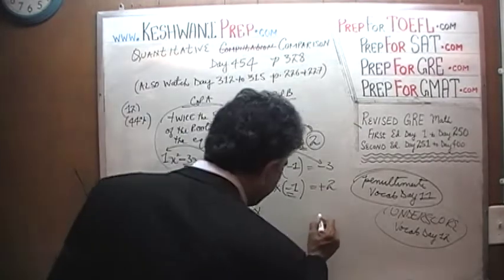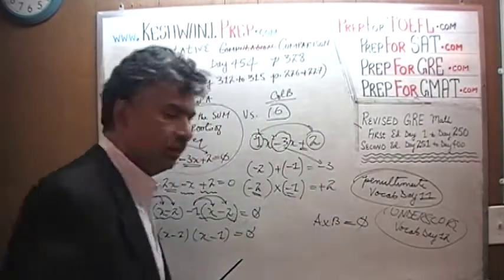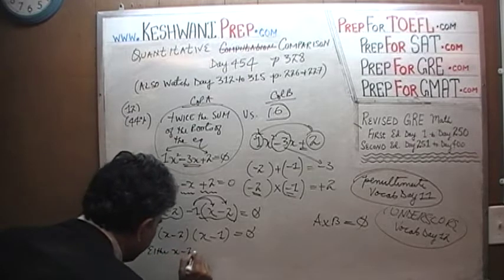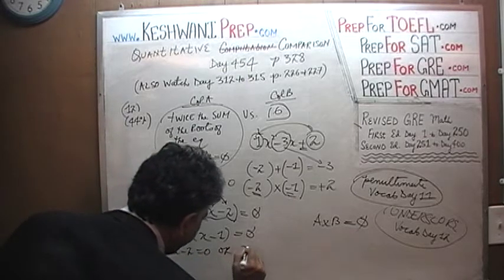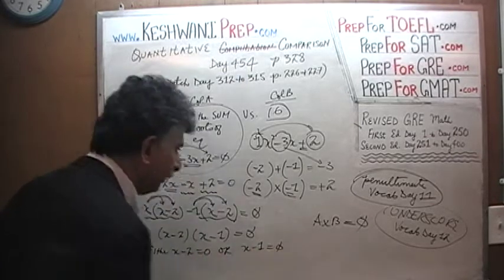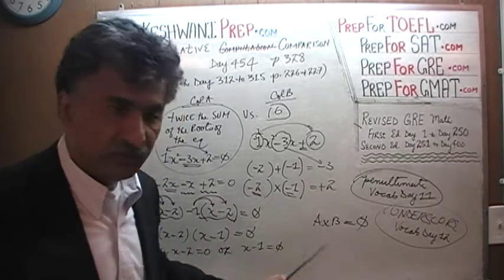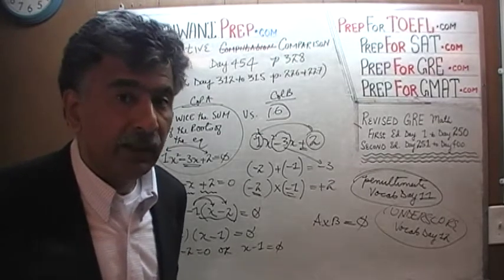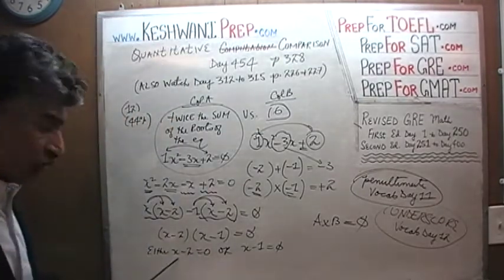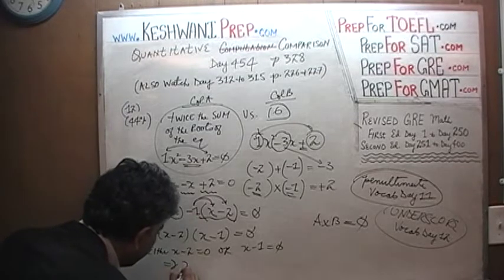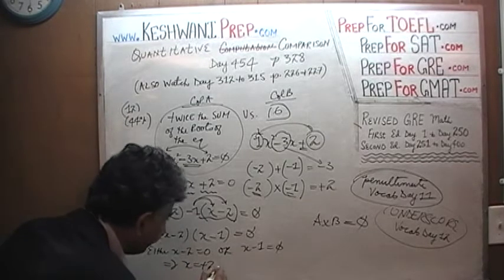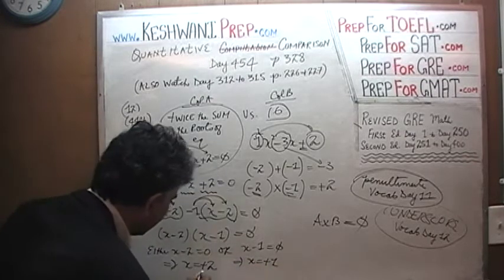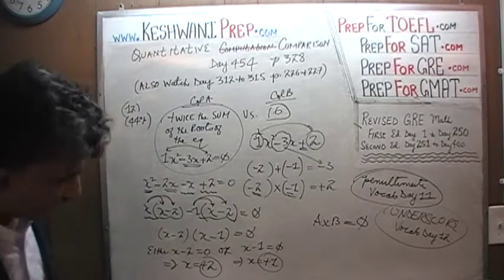When we have a product of two quantities equal to zero, either x minus 2 equals zero, which implies x equals 2, or x minus 1 equals zero, which implies x equals 1. Those are our roots: positive 1 and positive 2.